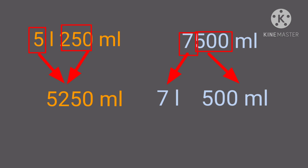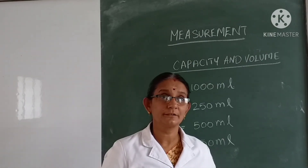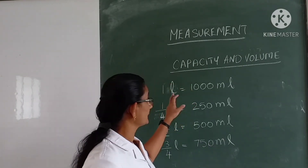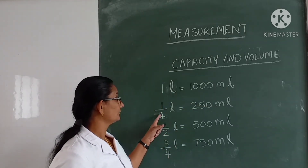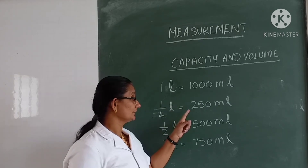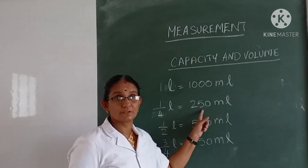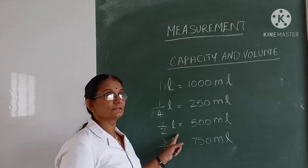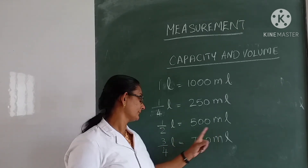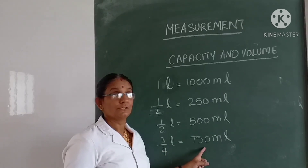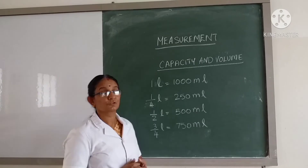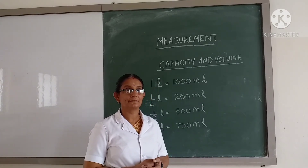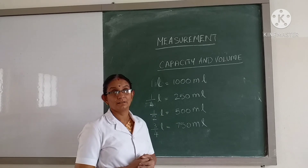Liters can be converted to milliliters and milliliters to liters in the simplest form, just as we did for weight and length. We know that 1 liter equals 1000 milliliters, so one-fourth of a liter equals 250 milliliters, half of a liter equals 500 milliliters, and three-fourths of a liter equals 750 milliliters. We can express fractions of liters as milliliters very easily using these values.